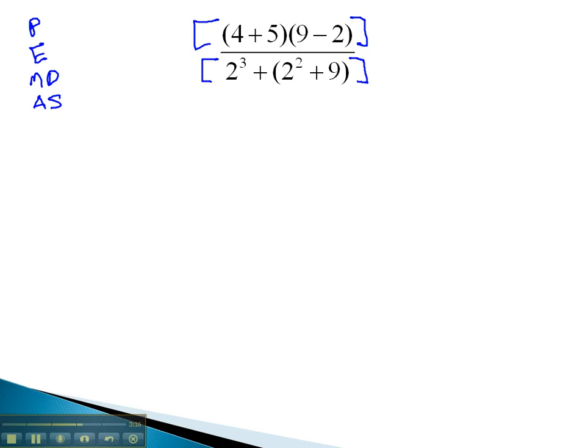Sometimes to make this easier, people do the top and bottom separately. So why don't we take a look at the top, and what's going on in the numerator? We have four plus five times nine minus two. Doing the parentheses first, we would have nine times seven, and then finally nine times seven is sixty-three. So the top of the numerator comes out to sixty-three.